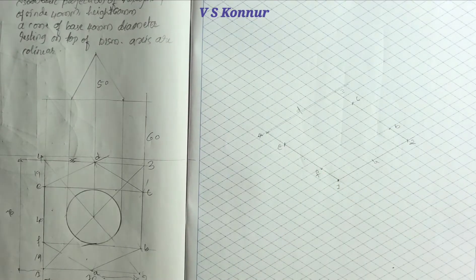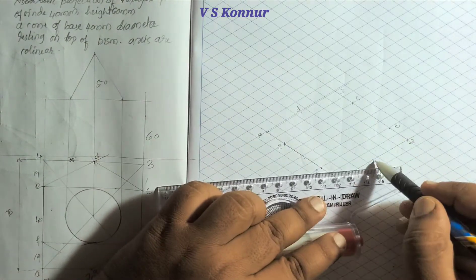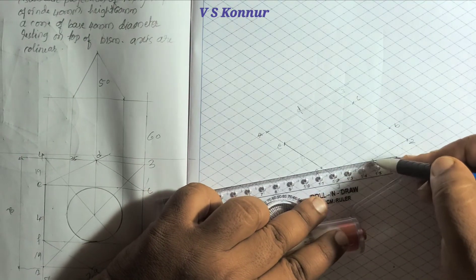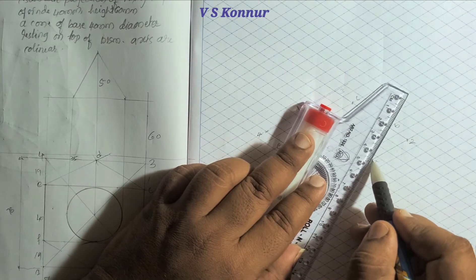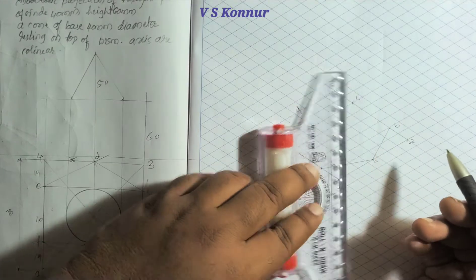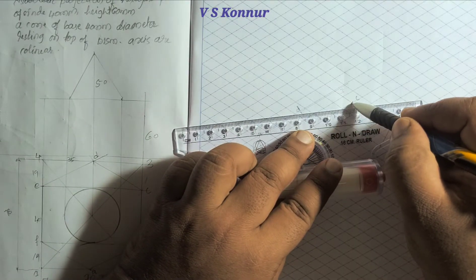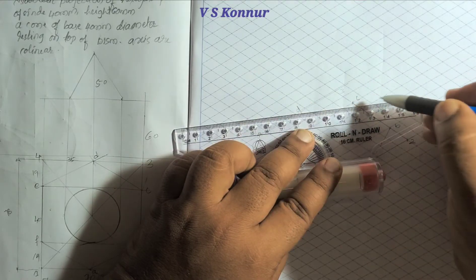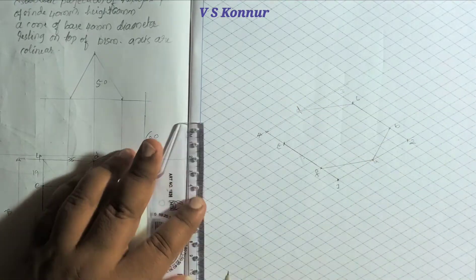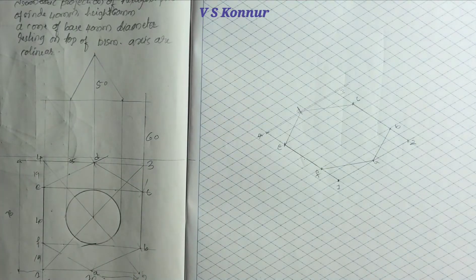All these points are obtained. Now we join them - a little bit darker than before. The hexagon is now transferred at the top. The height given for the hexagonal prism is 60mm.